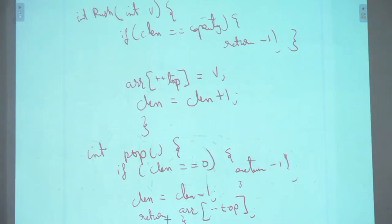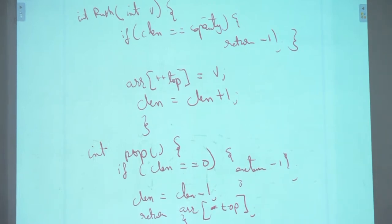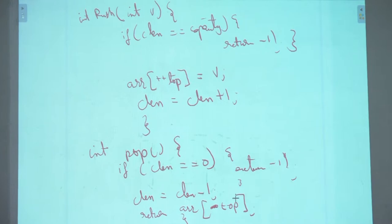I have to first take the top value and then decrement. I want the top element, so I should first retrieve the value at top, then decrement. For example, take the value, put it in some variable V, and then decrement top.